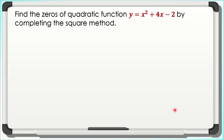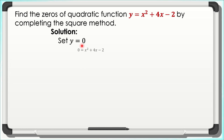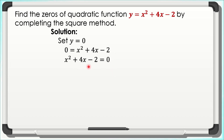We will now move on with the third method. We will find the zeros of y = x² + 4x − 2 by the completing the square method. For the solution, we set y equal to 0. Therefore, our equation is 0 = x² + 4x − 2. Using the symmetric property, we have x² + 4x − 2 = 0. Following the rule of completing the square, we move the constant to the right side, giving x² + 4x = 2.